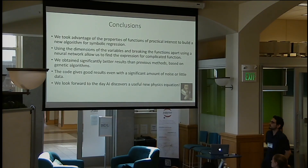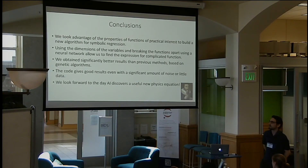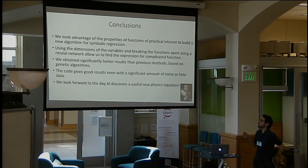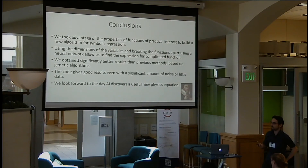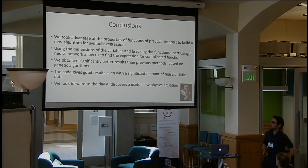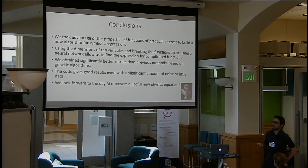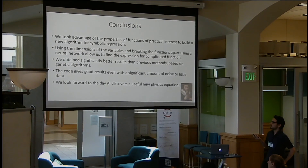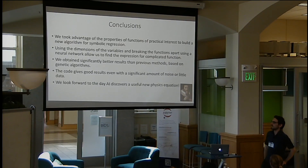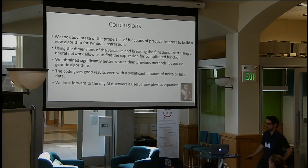In conclusion, we took advantage of the properties of functions of practical interest to build a new algorithm for symbolic regression. Using dimensional analysis and neural networks to search for patterns in these functions, we were able to break them apart into smaller pieces and find expressions for complicated functions. We obtained significantly better results than state-of-the-art genetic algorithm methods, with the code performing well even with significant noise and little data. We look forward to the day that AI will be able to discover new physics equations.